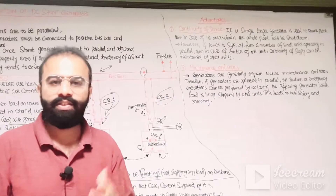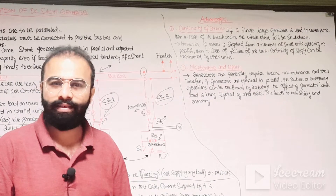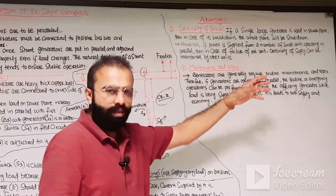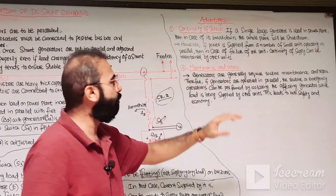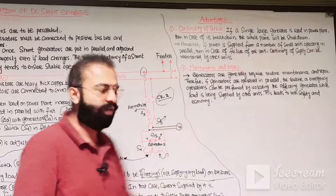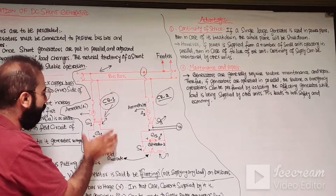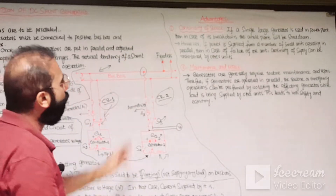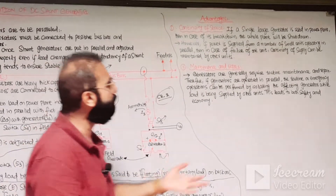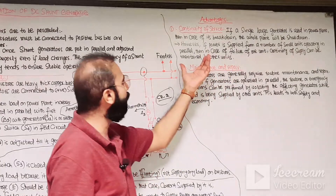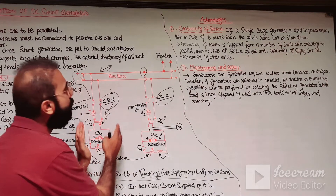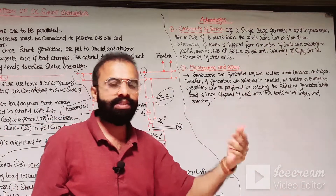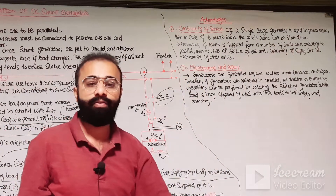Let us discuss the advantages of DC shunt generators connected in parallel. The first advantage is continuity of service. If a single large generator is used in the power plant and a fault occurs, the whole plant will shut down. However, if power is supplied from a number of small units operating in parallel, in the case of failure of any one unit, the continuity of supply can be maintained through the other units.